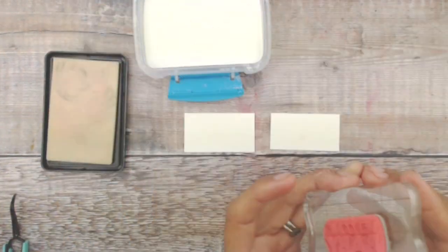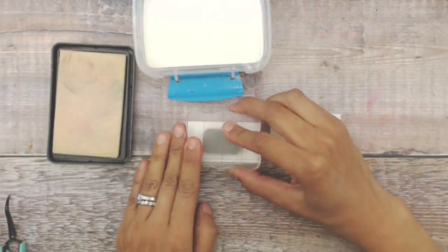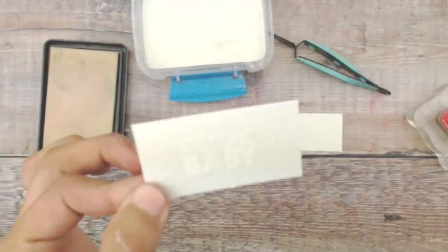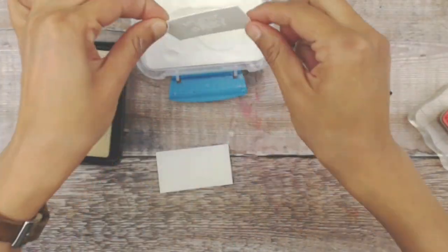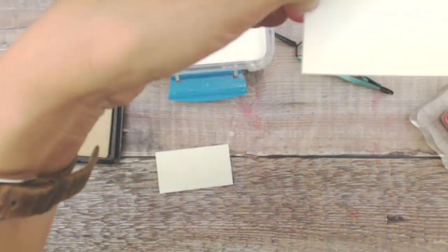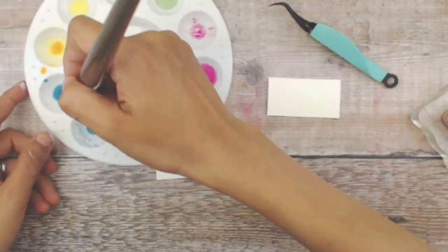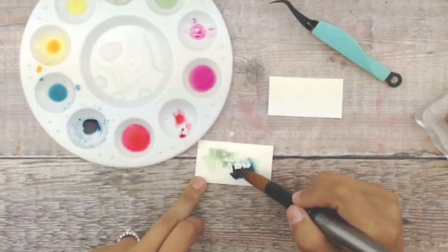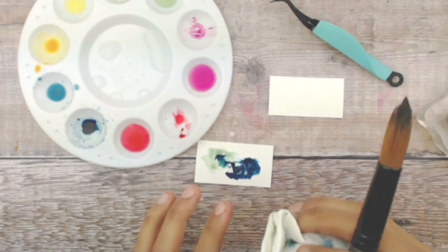While that dries we are going to heat emboss in white using white embossing powder and the stamp set from Hippo Birdie and it says welcome baby. Once that heat sets we're going to be using blue corn adding a droplet onto the actual sentiment and then adding some of the peapod onto the side.